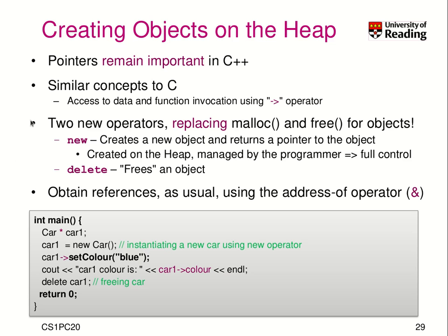Pointers remain important in C++, even though we have call-by-reference functions. The concept is the same as in C — when you try to access something that is a pointer from a class, you use the arrow operator. When we create an object on the heap, similar to using malloc and free in C, we now use new and delete syntax. We say car1 is a pointer to a car, and we assign it using new car, which stores the object on the heap — this extra area that the programmer has to manage.